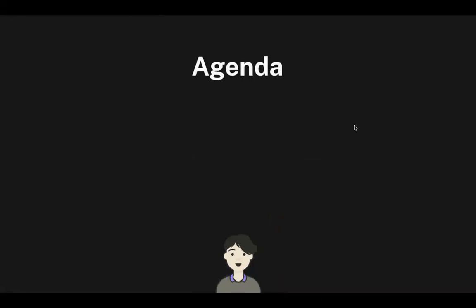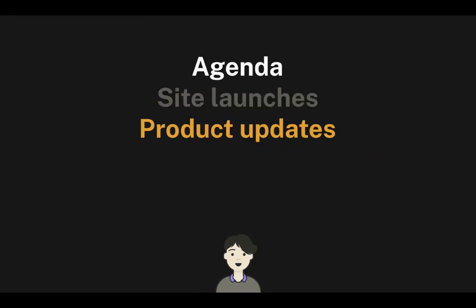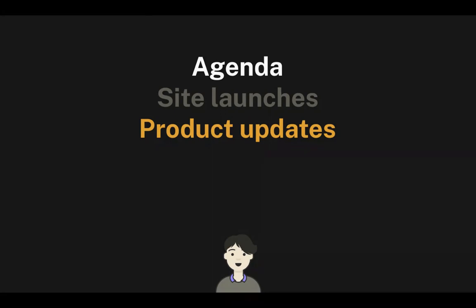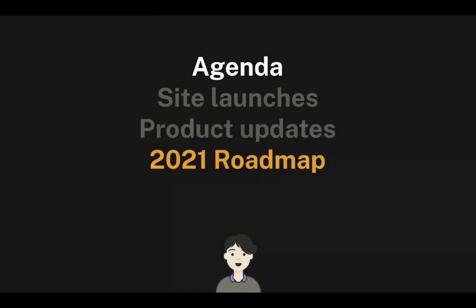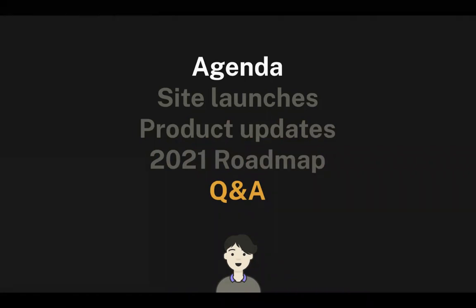Today we'll spend a little time looking back and looking ahead. We'll kick off with a large group of new site launches, then a few quick product updates. I'll be sad that we still haven't released the patch update I promised last month, but I'll hint at some great new stuff coming at the end of the month. Then we'll look ahead to our 2021 product roadmap — what we've learned over the last year and what we'll try to accomplish. I'm hoping to leave extra time for Q&A.